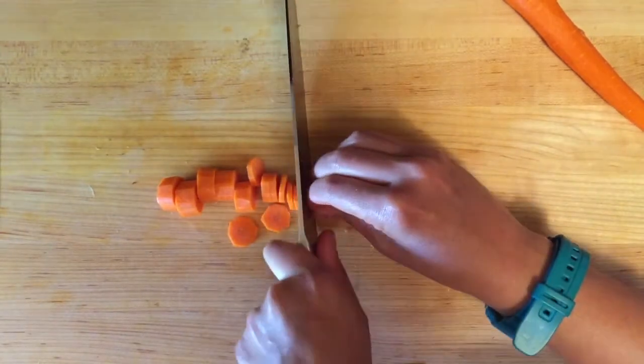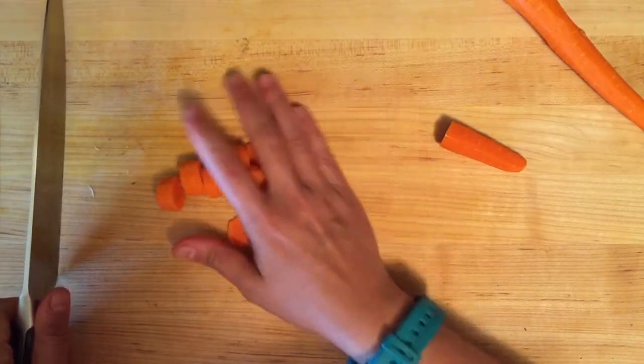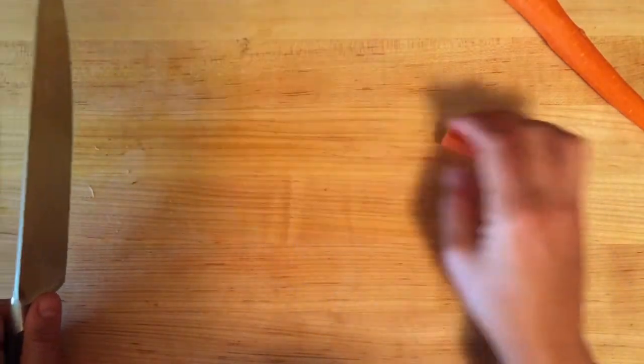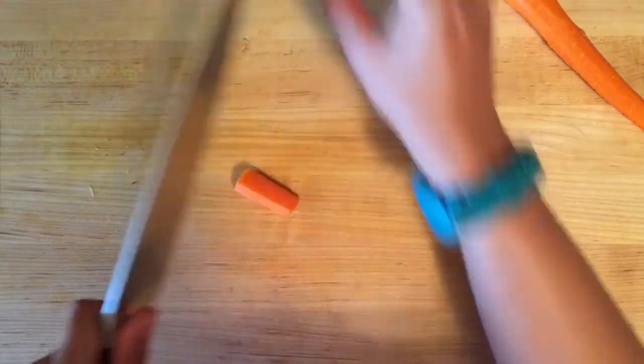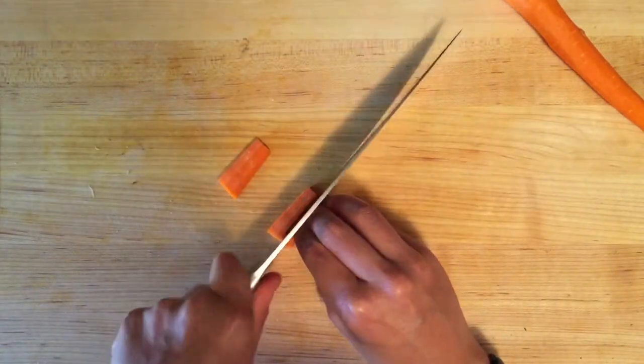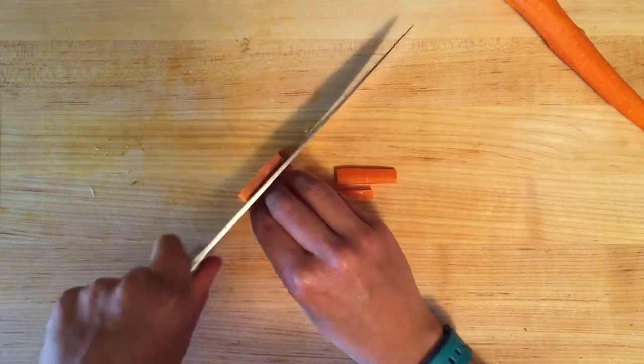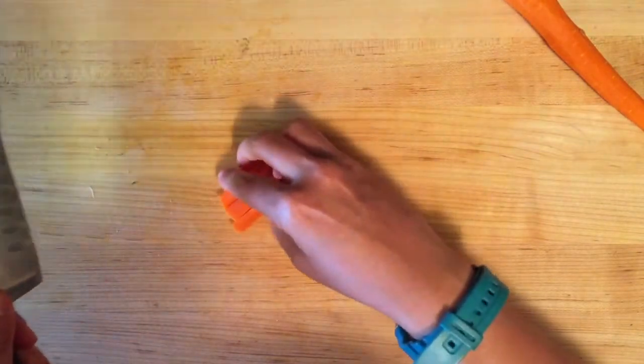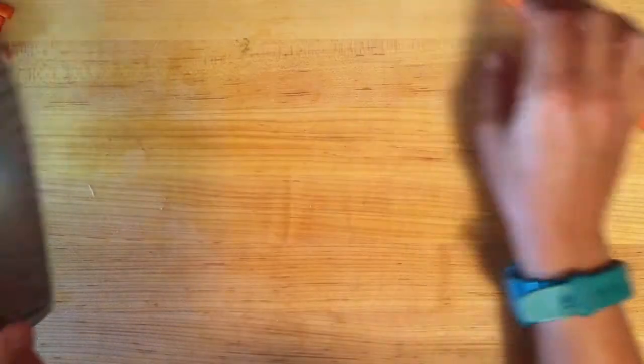You can always vary the width if you want to do thin slices for salads. For the look of a crudité platter or little carrot sticks, just slice in half and then slice again. And those are for dipping or just eating for a snack.